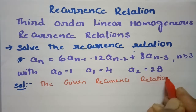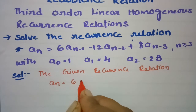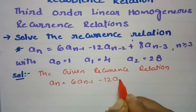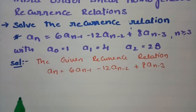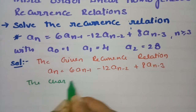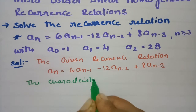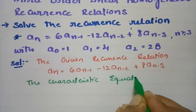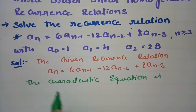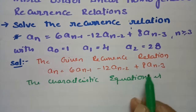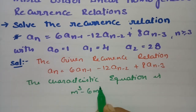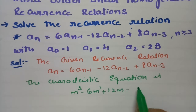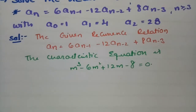The given recurrence relation is a_n = 6·a_{n-1} - 12·a_{n-2} + 8·a_{n-3}. The characteristic equation can be written as: m³ - 6m² + 12m - 8 = 0. Now we have to find the factors of this equation.